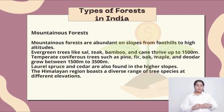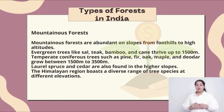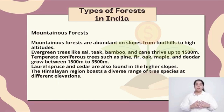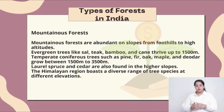Mountainous forests are abundant on slopes from foothills to high altitudes. Evergreen trees like sal, tea, bamboo and cane thrive up to 1,500 meters. Temperate coniferous trees such as pine, fir, oak, maple and deodar grow from 1,500 meters to 3,500 meters. Floral sprouts and cedar are also found on the higher slopes.